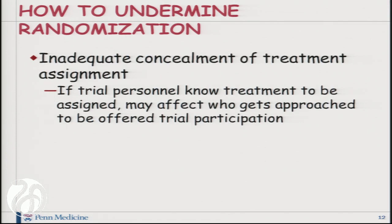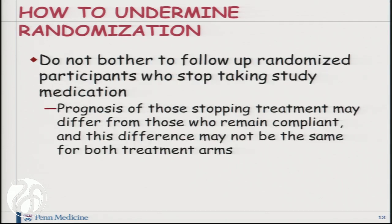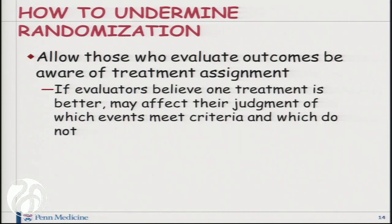Most of these undermine randomization because there's inadequate concealment of the treatment assignment. If trial personnel know the treatment to be assigned, this may affect who even gets approached to be offered trial participation. You can undermine randomization when you don't bother to follow up randomized participants who stopped taking the study medication or are otherwise non-compliant, because the prognosis of those stopping treatment may differ from those who remain compliant. And even if you have about the same numbers of dropouts on both arms, people may drop out on one arm for different reasons than on the other arm, and you lose that wonderful protection of assurance of equivalent prognosis in the two arms.